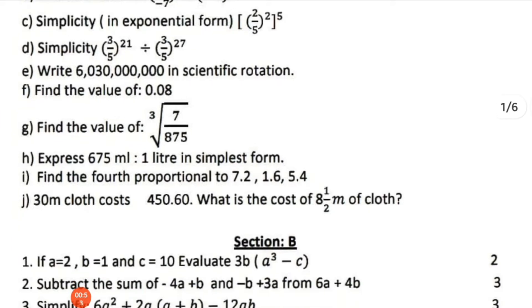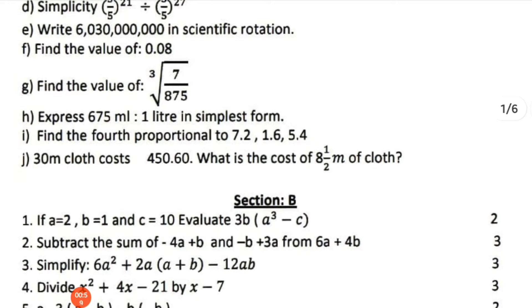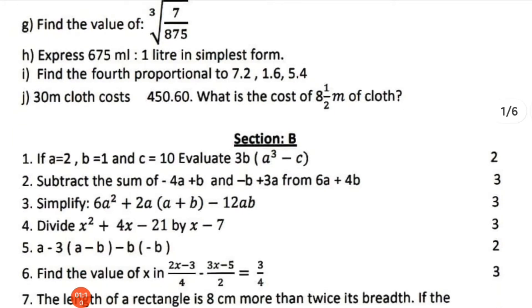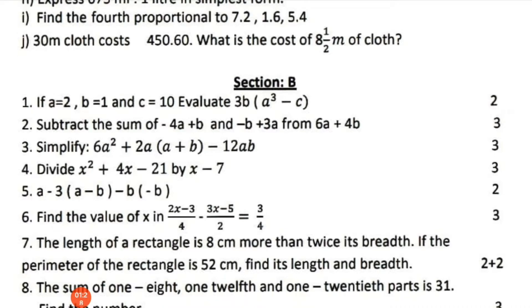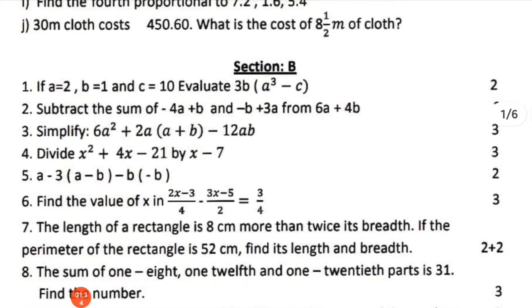Write 6,030,000 in scientific notation. Find the value of 0.08. Find the value of 7 by 8, 7.5 to the power 3. Express 6.75 milliliters to 1 liter in simplest form. Find the fourth proportional to 7, 1.6, 5, and 4. If 30 centimeters of cloth costs 5 rupees 0.60, what is the cost of 8 and a half meters of cloth?